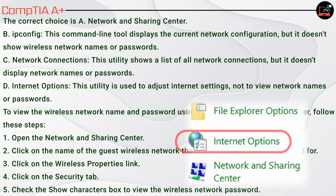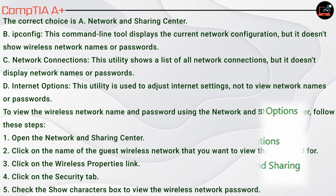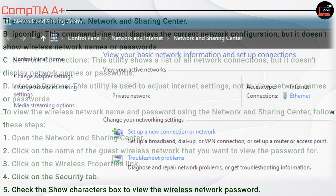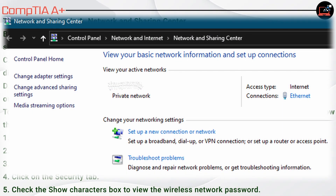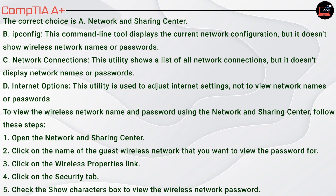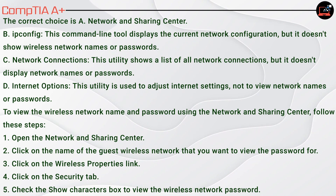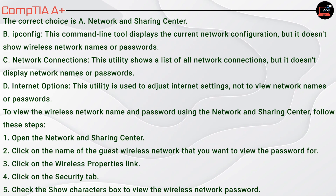To view the wireless network name and password using the Network and Sharing Center, follow these steps: 1. Open the Network and Sharing Center. 2. Click on the name of the guest wireless network that you want to view the password for. 3. Click on the Wireless Properties link. 4. Click on the Security tab. 5. Check the Show Characters box to view the wireless network password.